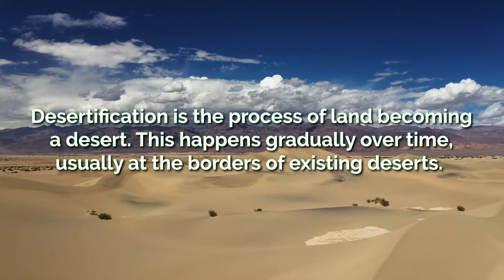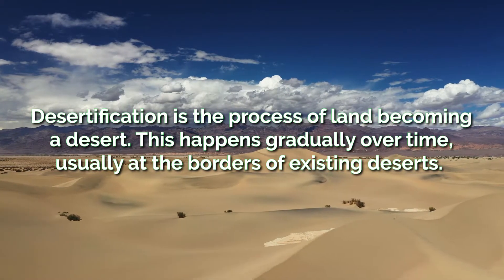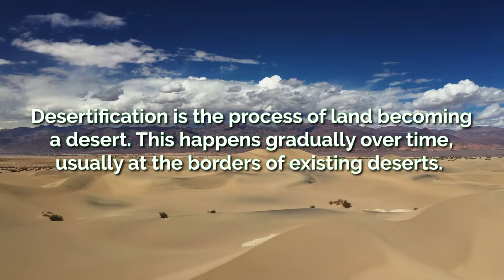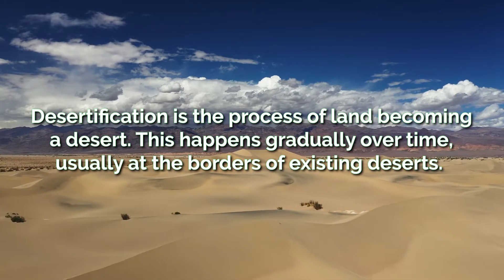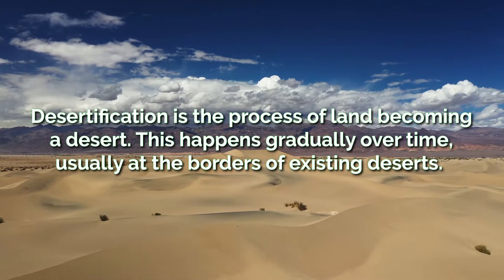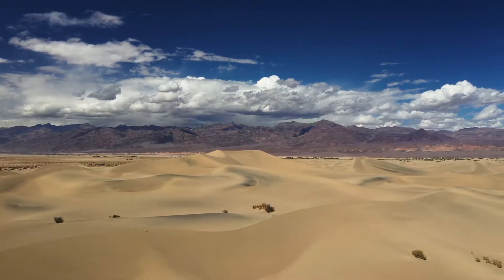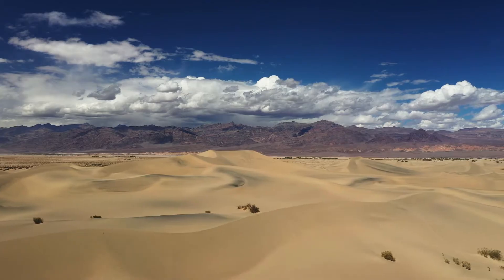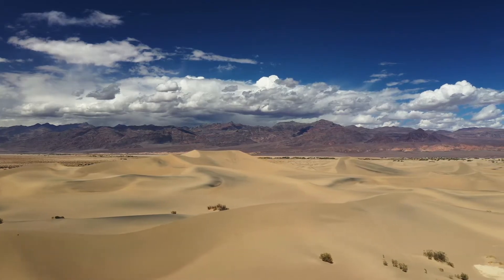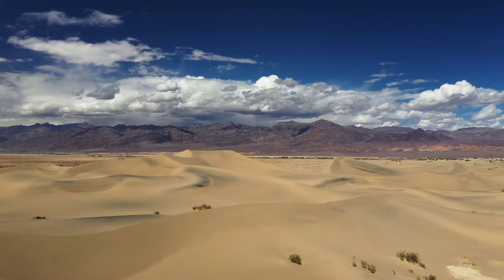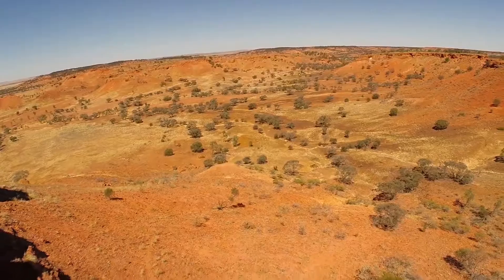Desertification is the process of land becoming a desert. This happens gradually over time and is usually at the borders of existing deserts. Some of the areas most at risk from desertification include the Sahel region in Africa, parts of Europe, Australia and the United States.